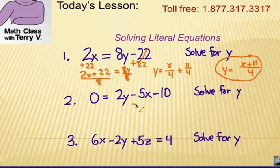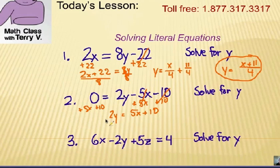Number 2, solve for y. Well again, I'm going to add 5x to each side, and add 10 to each side. Now I'm going to kind of combine steps here. I'm going to just flip everything around, and so I'm going to say 2y equals 5x plus 10. The only thing left to do is divide by 2.